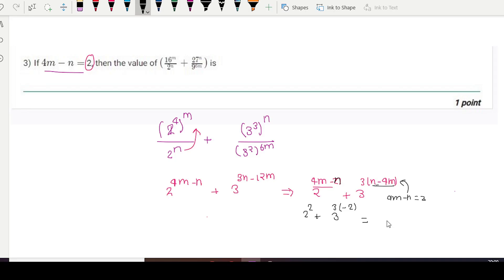So now compute the value: 2 to the power 2 plus 3 to the power minus 6. So 1 by 4 plus... sorry, this will give 4 plus 1 divided by 81 times 9.